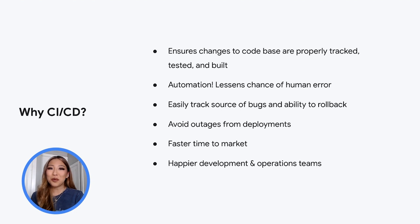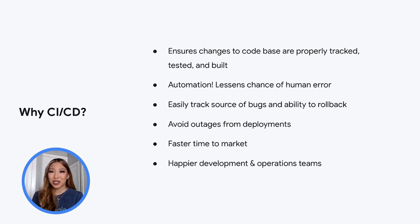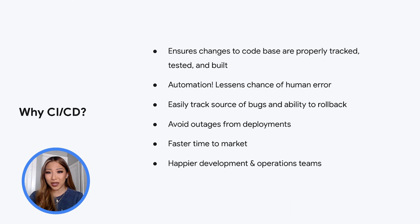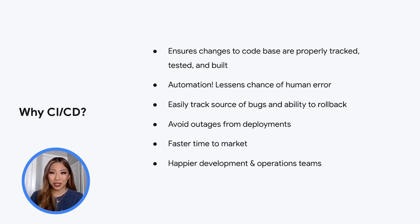Everything is fully automated, with every single commit to your source code management system built into artifacts and then deployed to production. Some common tools for continuous deployment include Puppet, Jenkins, and Bash scripts. Now that we've gone through what continuous integration and continuous deployment are, you may be wondering why these are such important concepts to apply. First, they ensure that all changes to code are tracked, tested, and built. Documentation is key, so there are no questions as to what features are in each release and who made the changes. Second, automating a lot of these manual tasks reduces chances of human error.